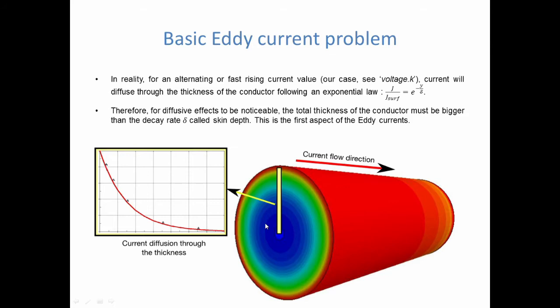In reality what happens is that for an alternating or fast rising current, this was the configuration which we had in the example, current will have a tendency to diffuse through the thickness following an exponential law and associated to a decay rate which we call delta. From this, what you can already easily deduce is that for diffusive effects to be noticeable, the total thickness of the conductor must be bigger than the value of this decay rate, this decay rate which is also called skin depth.